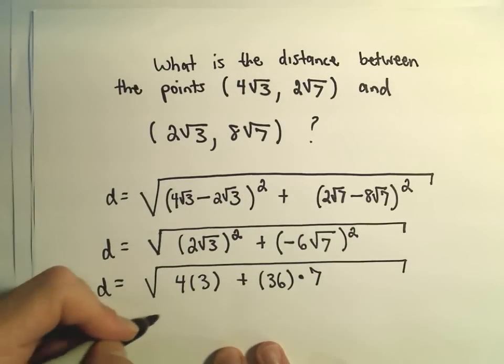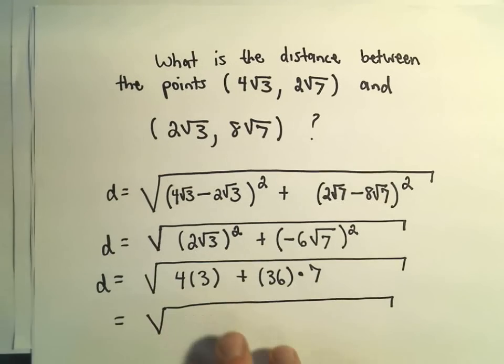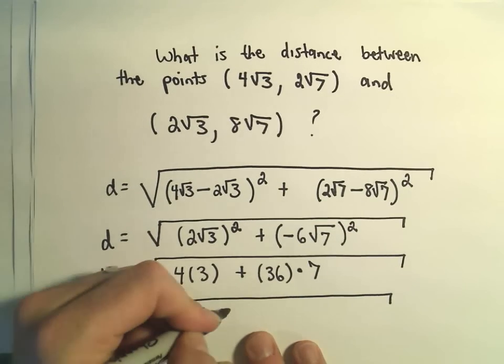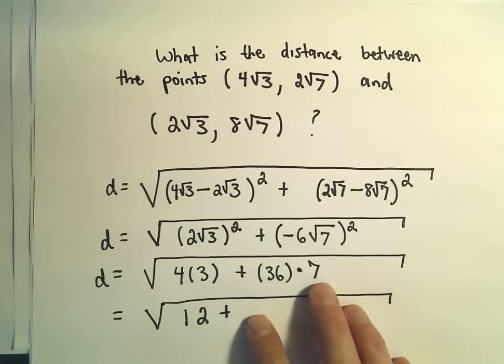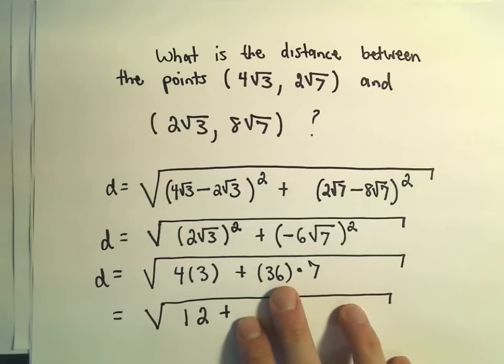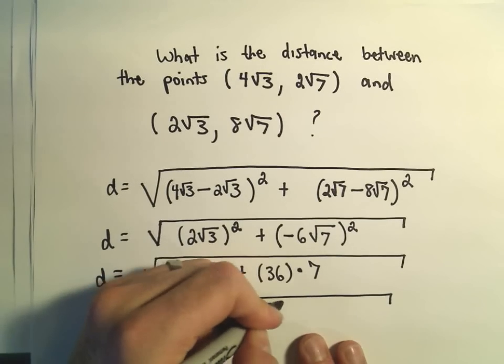We can keep simplifying here a little bit more. So, 4 times 3 is simply going to give us 12, 36 times 7, 30 times 7 would be 210, 7 times 6 would be 42, so 210 plus 42 would be 252.